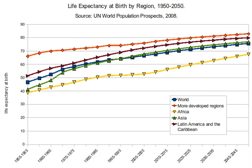Mathematically, life expectancy is the mean number of years of life remaining at a given age, assuming age-specific mortality rates remain at their most recently measured levels. It is denoted by eₓ, which means the mean number of subsequent years of life for someone now aged x, according to a particular mortality experience.